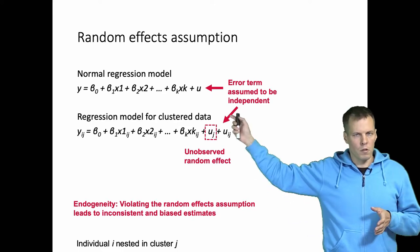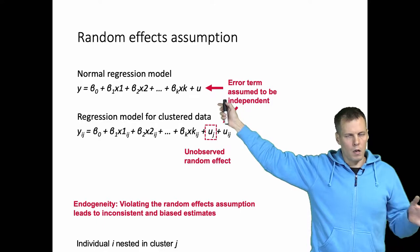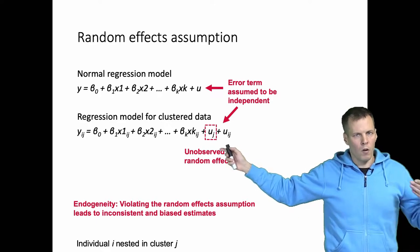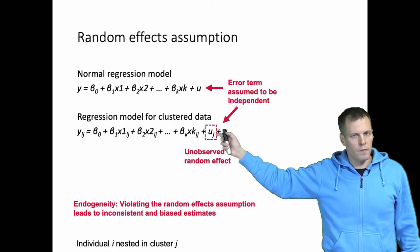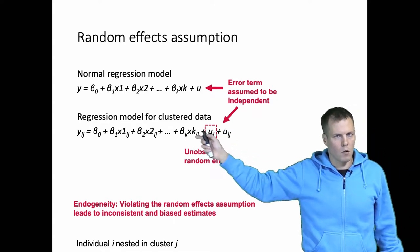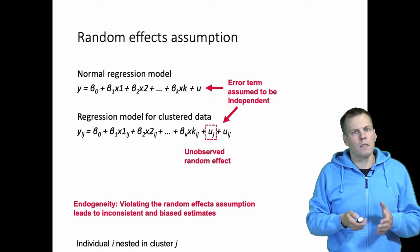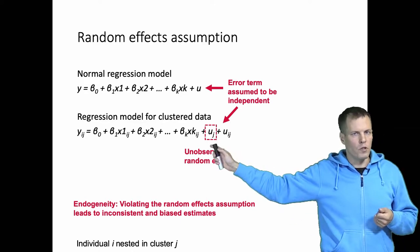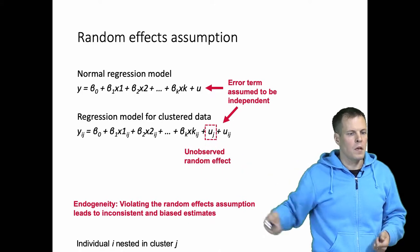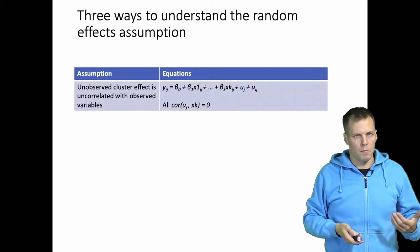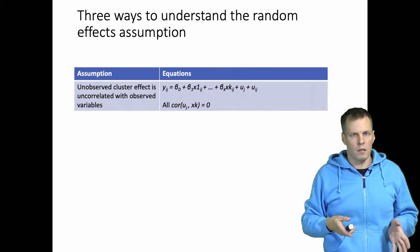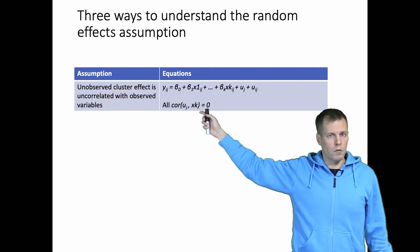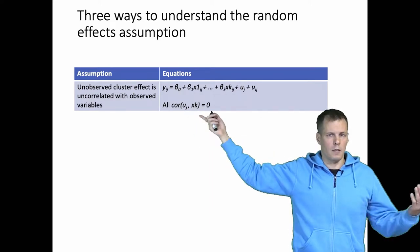In the normal regression model, the assumption that the error term is uncorrelated with the x's can be tested directly. In the multi-level context there actually are tests for whether this uj term is correlated with x's or not. But before we go into the tests, let's go through three different ways of understanding what it means that uj is uncorrelated with x's. The first way is using the equation that uj terms are uncorrelated with all predictors — that's the assumption.